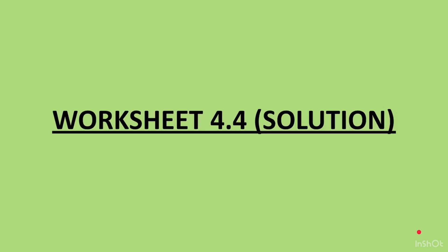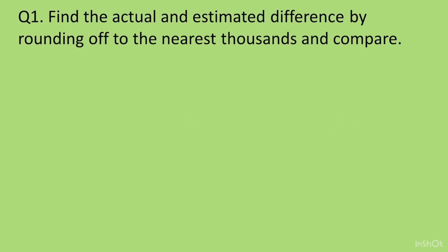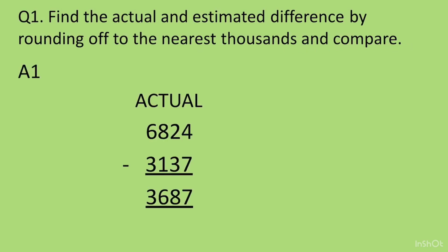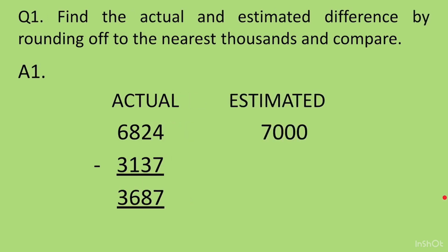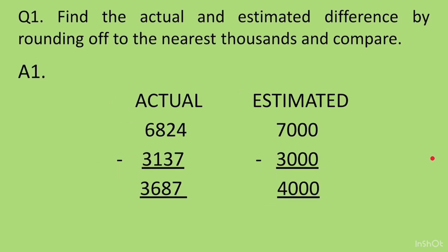Solutions to worksheet 4.4. If you haven't solved the worksheet yet, please pause, go back, solve it, and then check. Question 1: The actual difference of 6624 and 3337 is 3287. For the estimated value, 6624 rounds off to 7000 and 3137 rounds off to 3000. Subtracting the rounded values gives 4000. Both the actual and estimated values are close to each other.